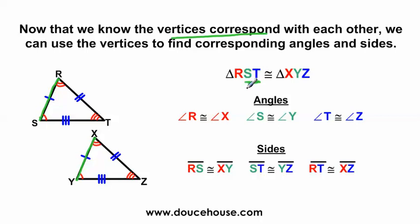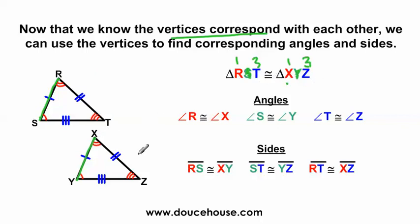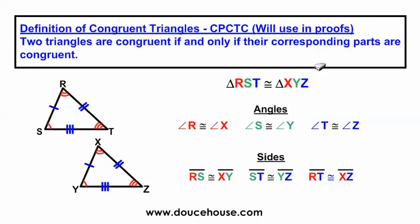Looking at the next pair: S comes second and T comes third, Y comes second and Z comes third. So vertices S and T create side ST, which corresponds with Y and Z — so line segment ST is congruent to line segment YZ. And for the last one, looking at the first and third letters and ignoring S and Y: from R to T creates side RT, and R corresponds with X while T corresponds with Z, so side RT is congruent to side XZ. The order of the letters in these statements indicates which sides and angles are congruent to each other.